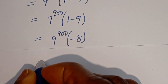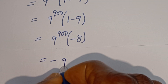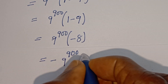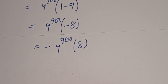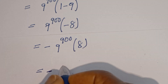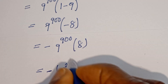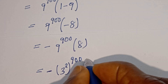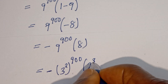Then this can be written as minus 9 to the power of 900 multiplied by 8. Now, this can be written as minus 3 squared to the power of 900, multiplied by 8, which can be written as 2 to the power of 3.